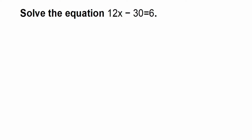Hey everyone, here is a question on algebra. The question is: solve the equation 2l(x minus 30) is equal to 6. To solve this equation, there are two ways — the balance method and the transpose method. I'm going to use the transpose method.